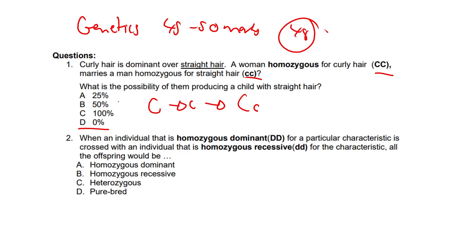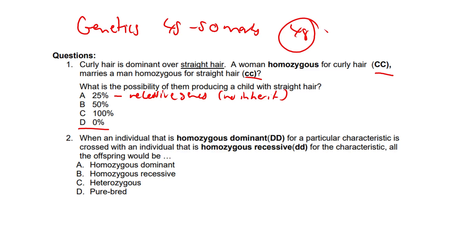Here are reasons why the other options don't work. The 25% option is incorrect because none of the offspring can inherit two recessive genes. The 50% option is also incorrect because no child would be straight-haired. And 100% is completely incorrect because this implies all offspring would have straight hair, which is entirely not possible.